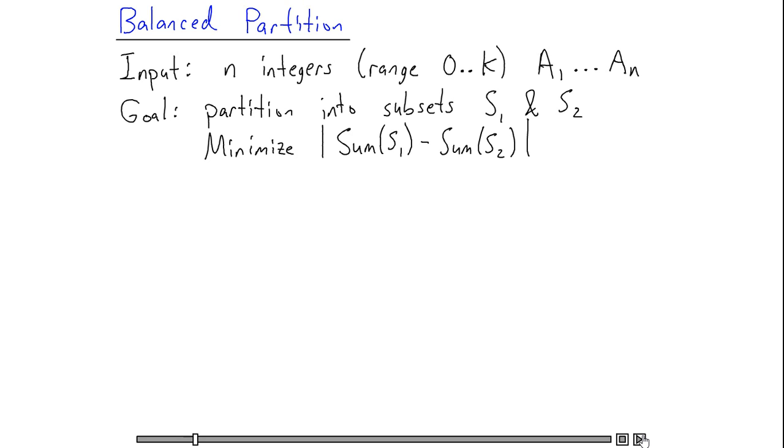My dynamic programming subproblems will be the following. I'm going to let p of ij take the value 1 if there is some subset of the first i integers which has a sum of j, and I'm going to let pij be 0 otherwise.